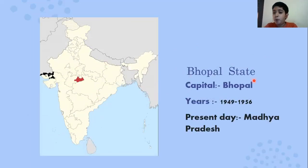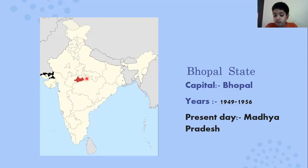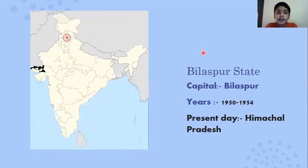Next is Bhopal State. The capital was Bhopal and it existed from 1949 to 1956. It is now in Madhya Pradesh — I'm making an outline here. Bhopal, which was the Bhopal State, is the capital of Madhya Pradesh today.